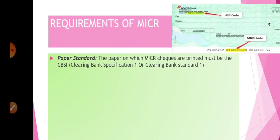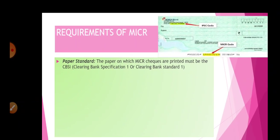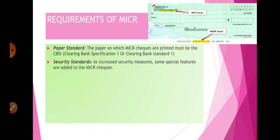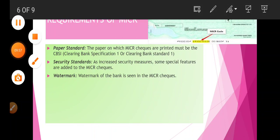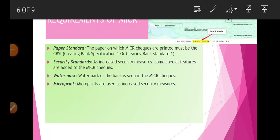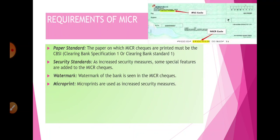The second requirement for MICR cheques is the security standard. Security measures have increased significantly today. When we talk about MICR cheques, certain security features must be added. The bank's watermark should be visible on the MICR cheque. The next security requirement is microprint — micro prints are used as an increased security measure. Very small micro prints are used on the cheque to further enhance its security.